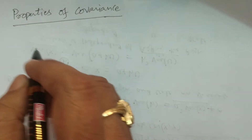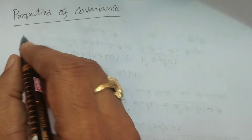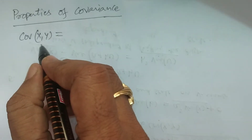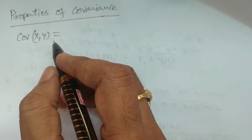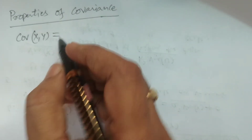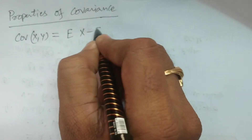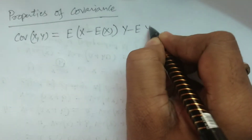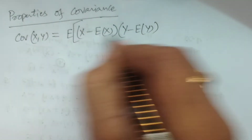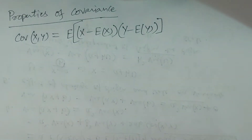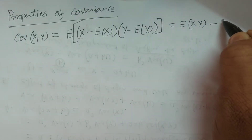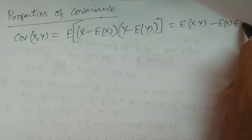First of all, the formula of covariance. Covariance of x, y is denoted by COV(x, y). The formula is: covariance of x, y is equal to expectation of (x minus expectation of x) times (y minus expectation of y). Another simpler formula is: expectation of xy minus expectation of x times expectation of y.